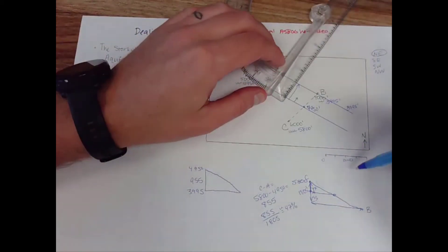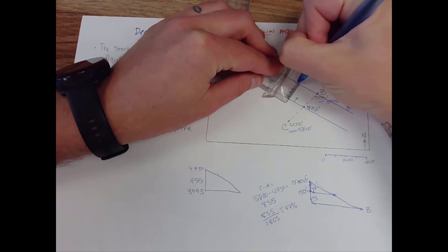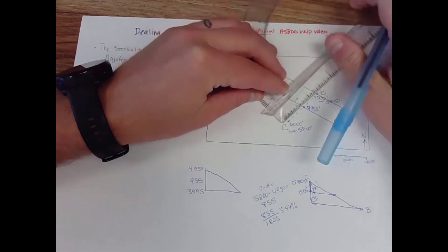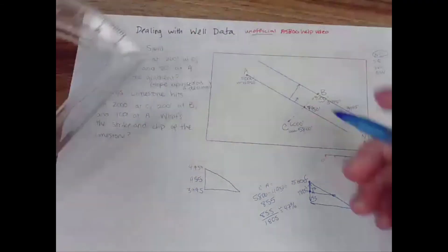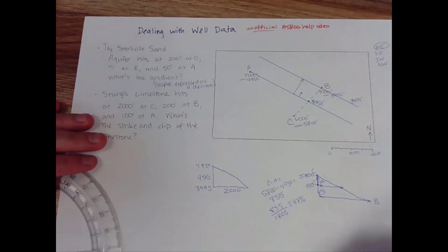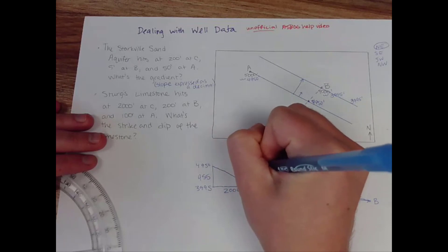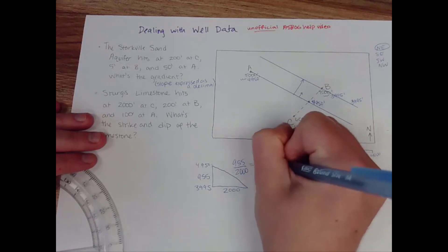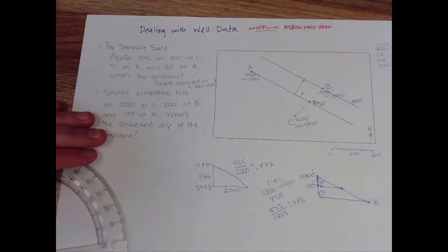So take your ruler, mark the distance between this line and this line. This line comes down, that's 2,000 feet and so my gradient is going to be rise over run, 955 divided by a run of 2,000. So my gradient ends up being 0.477 and if it asks you for a direction it's to the northeast.